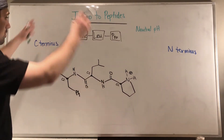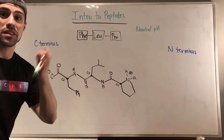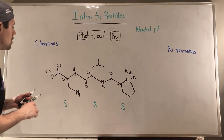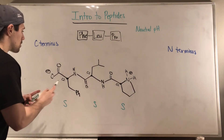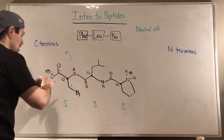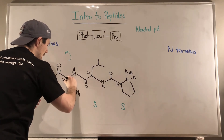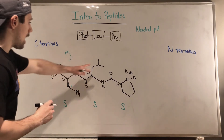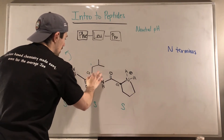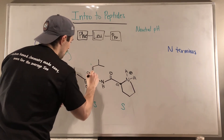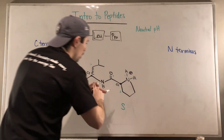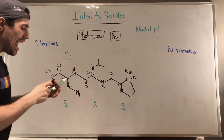Now we structurally have our tripeptide. We need to go back and make sure we have S configuration at each C2 carbon. For the first residue: priorities give us a wheel that looks S, so we wedge it. For the second: priorities give us a wheel that looks R, which is not what we want — so we dash it to get S. For the third (proline): priorities give us S, which is what we want, so we wedge it. Easy as pie.